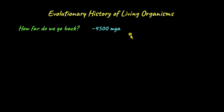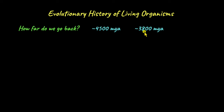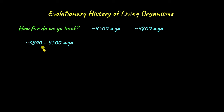Or do we go back slightly earlier, about 3,800 million years ago? This is when life is believed to have originated on Earth. Keep in mind that origination and evolution are two different things. Life first originated on Earth, and then from that, a lot of species later evolved.